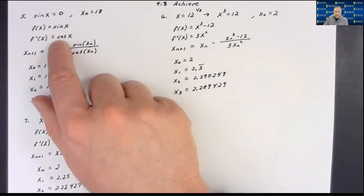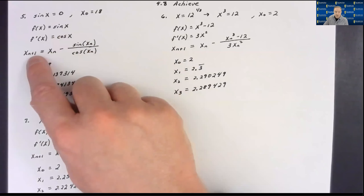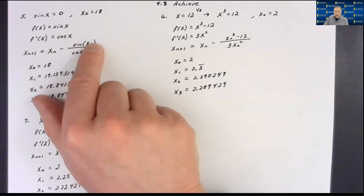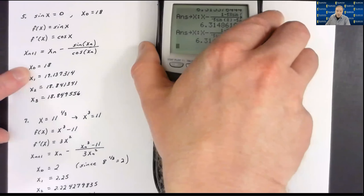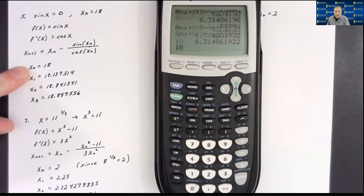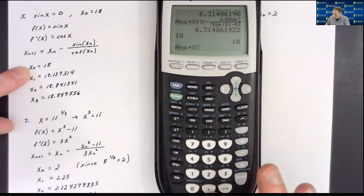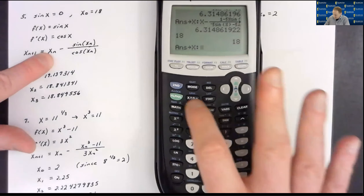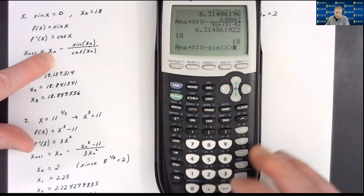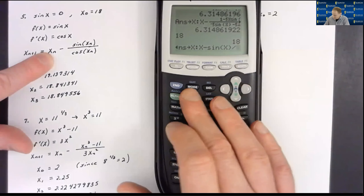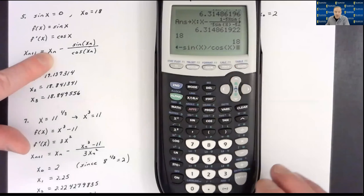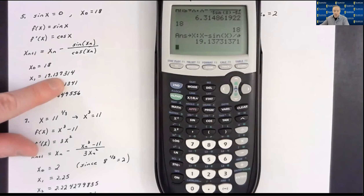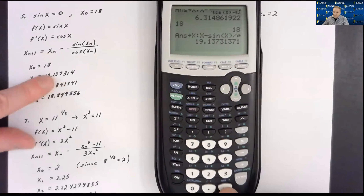f(x) = sin(x) and f'(x) = cos(x). Newton's method gives each successive guess as the previous minus sin(x) over cos(x). I enter 18, store as x, hit colon, then type Newton's method: x minus sin(x) divided by cos(x) — we could have just used tan(x) there. My first refined guess is 19.137314 to six decimal places. That changed quite a bit — went up 1.1 units, which is a pretty concerning change.